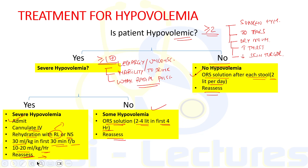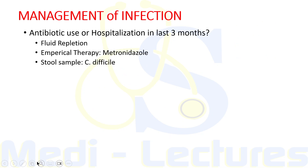Once hypovolemia has been treated, we move to management of infection. If the patient has taken antibiotics or been hospitalized in the last three months, we suspect Clostridium difficile infection. Fluid repletion is done with ORS or IV depending on severity, and empirical therapy is started with metronidazole 400 mg TDS for 10 days. We can also send a stool sample for C. difficile testing along with routine CBC, LFT, and RFT, although stool testing is rarely done.